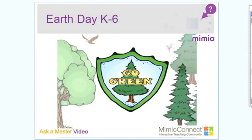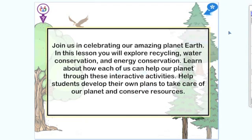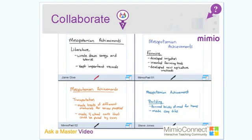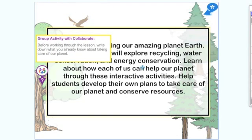Let's start looking at the lessons. The first one is on Earth Day and it's geared for K-6. These lessons will explore recycling, water conservation, and energy conservation. Throughout the lessons, you'll notice the Collaborate icon. Whenever you see this icon, pull it down and it will give you ideas of how you can do some group work with your students as well as how you might be able to access Mimeo Mobile.